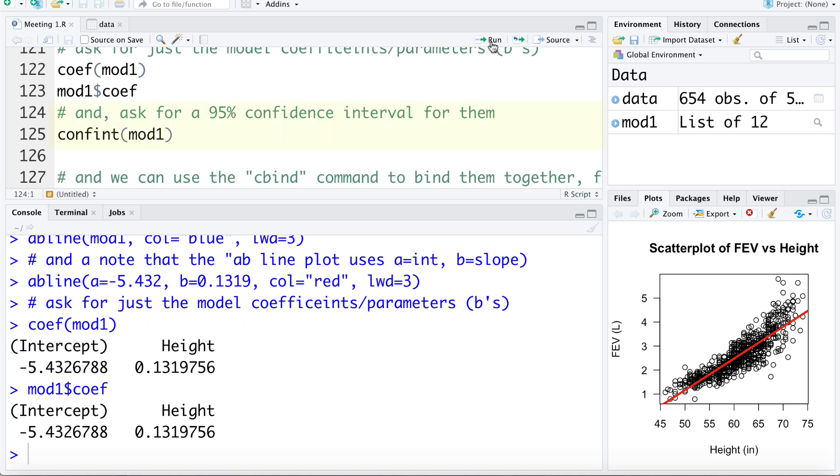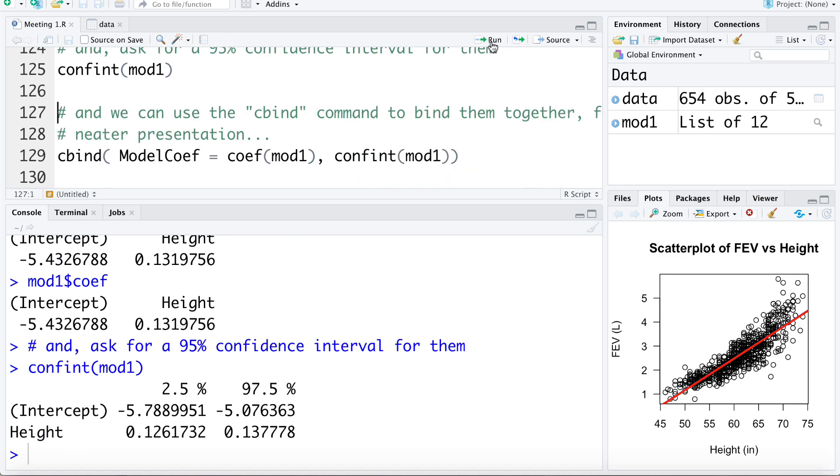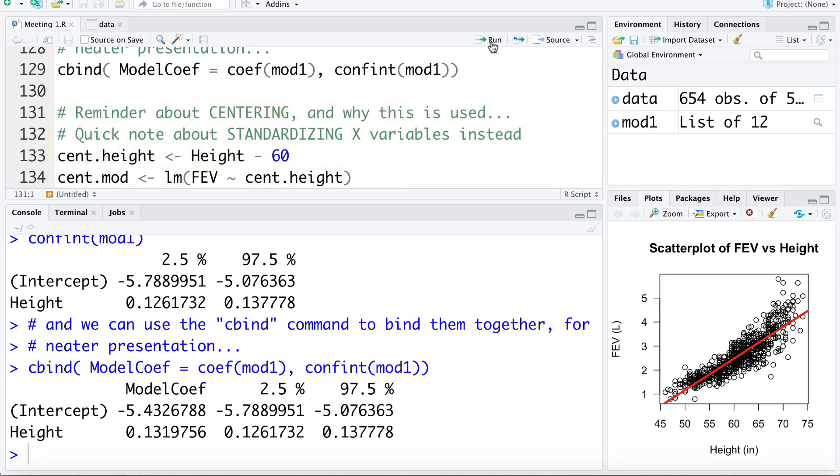We can add a 95% confidence interval around the estimates of the model slope and the model intercept using the confint command. And just a slightly neater way to present it, I'm going to use the cbind or the column bind command to bind these together column-wise. We can now see the model coefficient for height is 0.13, and we're 95% confident it's between 0.126 and 0.137.